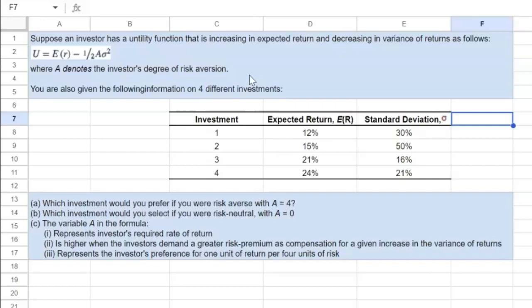You're given a utility function which is expressed as expected return minus half times A times sigma squared, where A denotes the investor's degree of risk aversion.